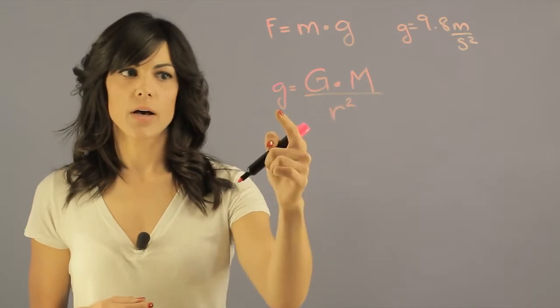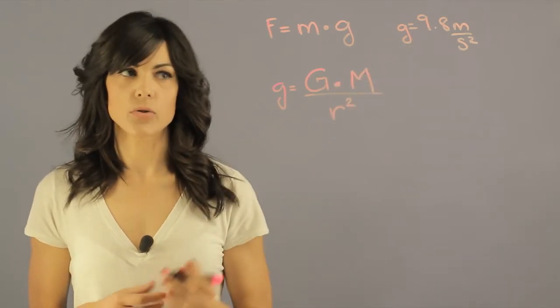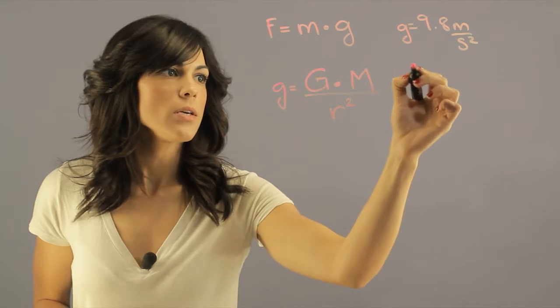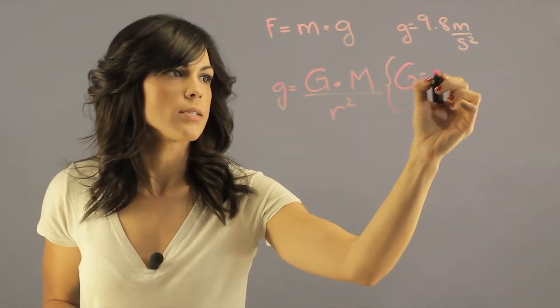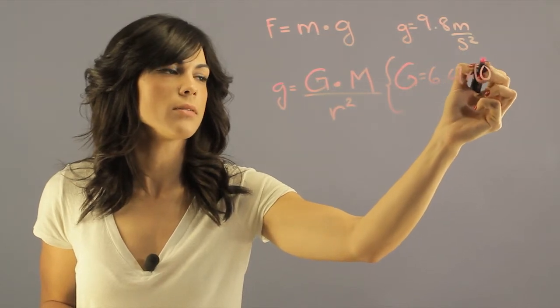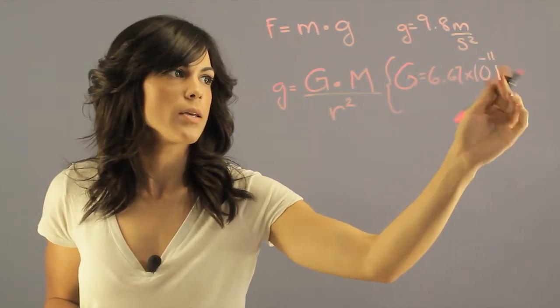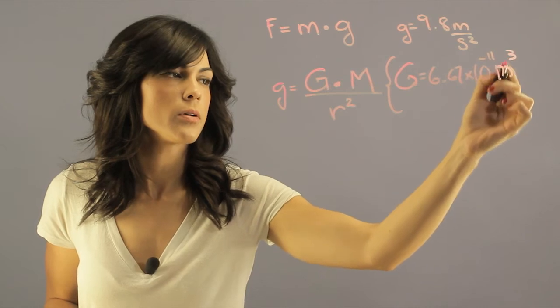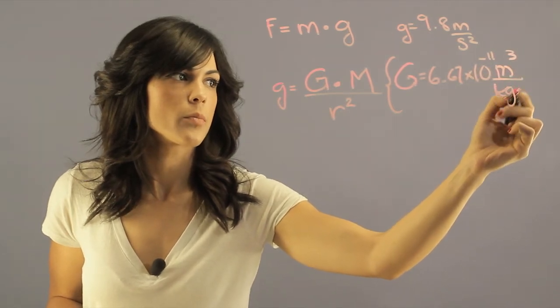Let's actually derive this 9.8 so you get to see it. The gravitational constant G equals 6.67 times 10 to the minus 11, and is meter cubed per kilogram per second squared.